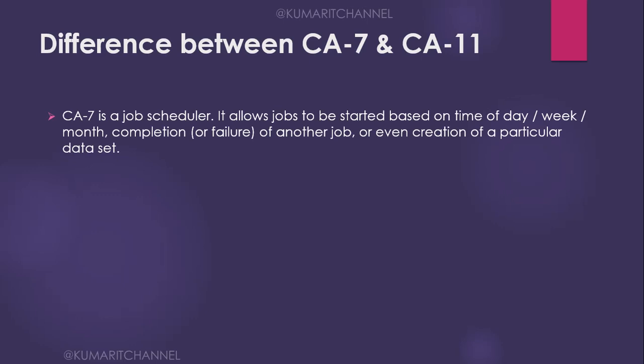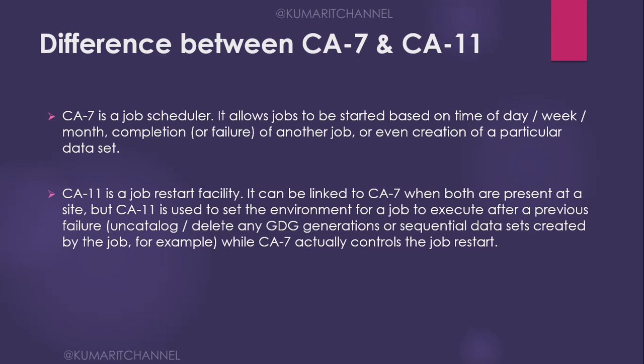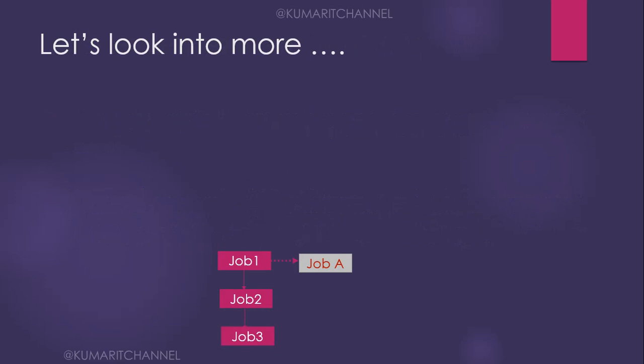The difference between CA7 and C11: CA7 is a job scheduler that allows jobs to be started based on time of day, week, month, completion or failure of another job, or creation of a particular dataset. C11 is a job restart facility that can be linked to CA7 when both are present at a site. C11 sets the environment for a job to execute after a previous failure — handling uncatalog, delete, and GDG creation — while CA7 controls the actual job restart. C11 is mostly used in production.